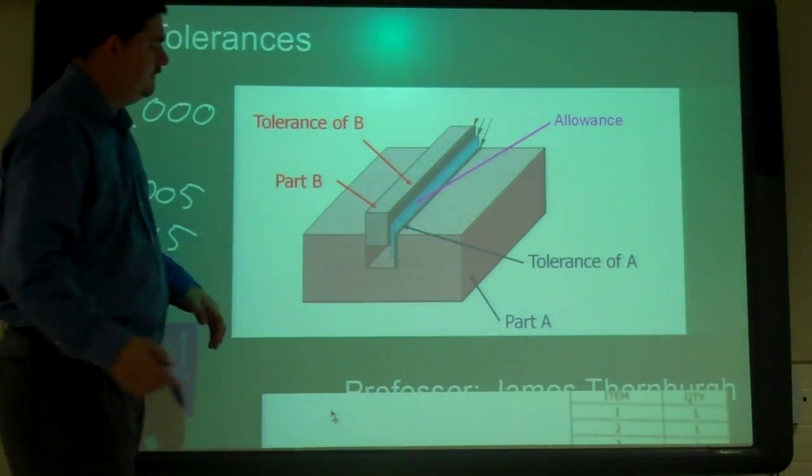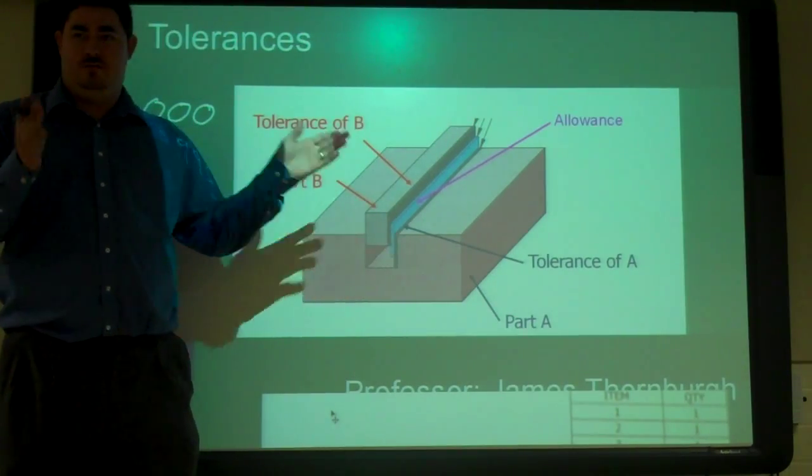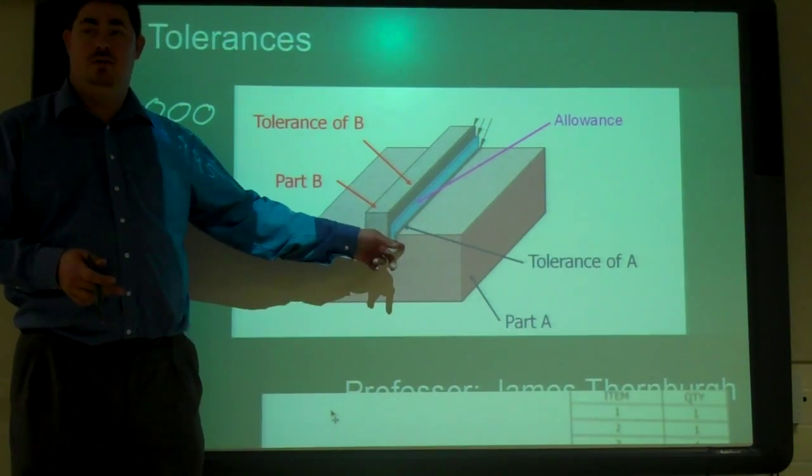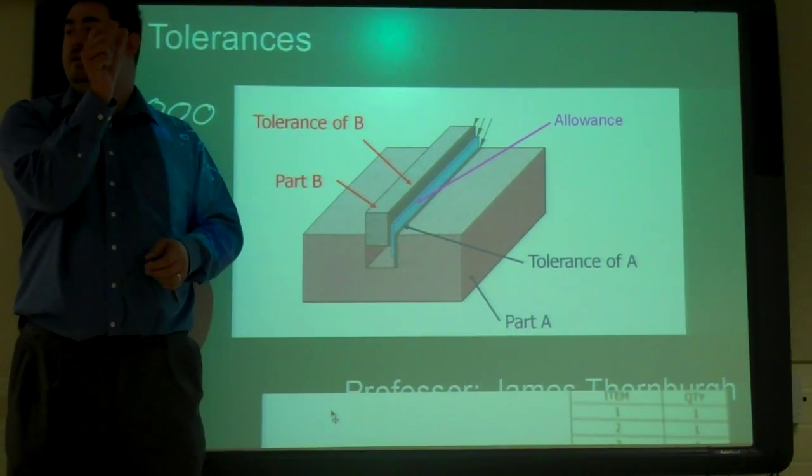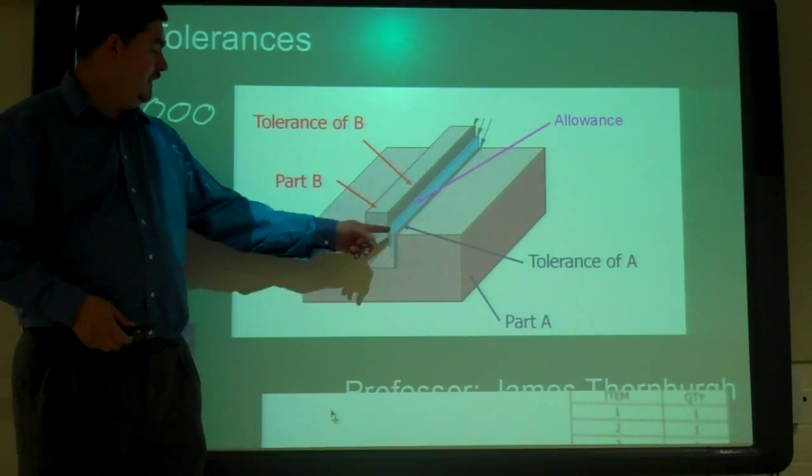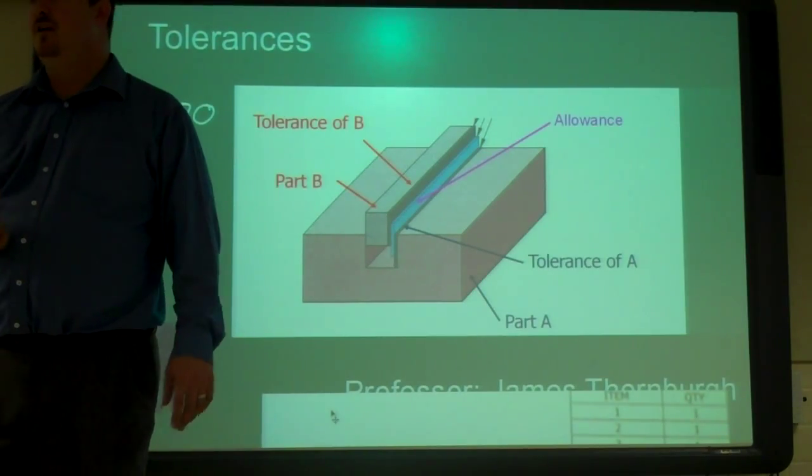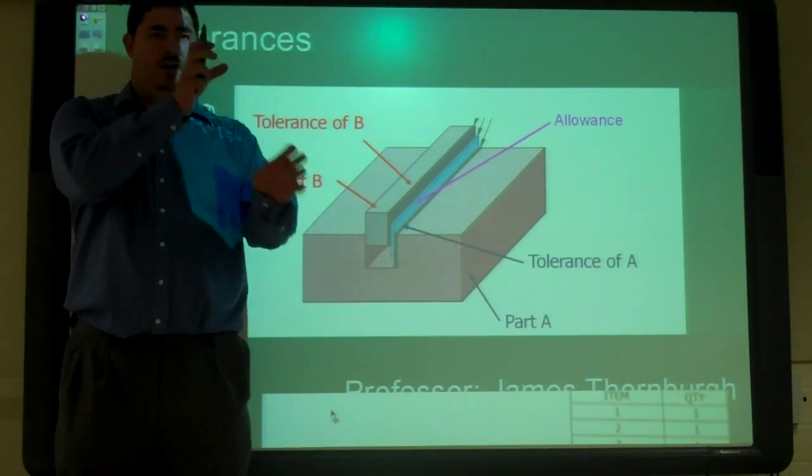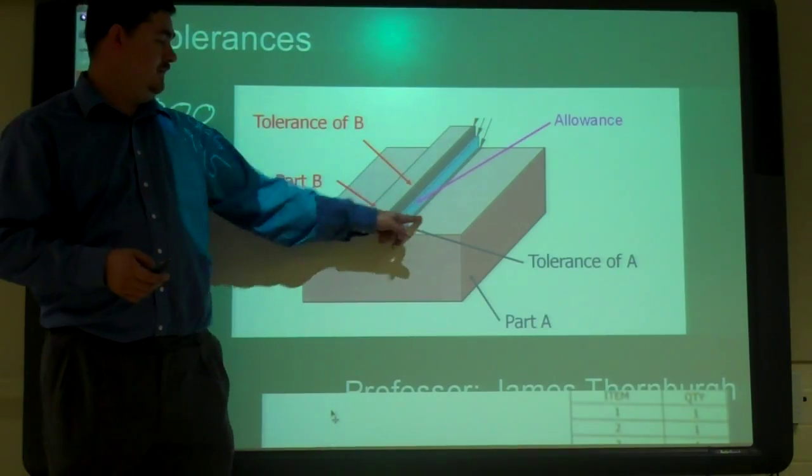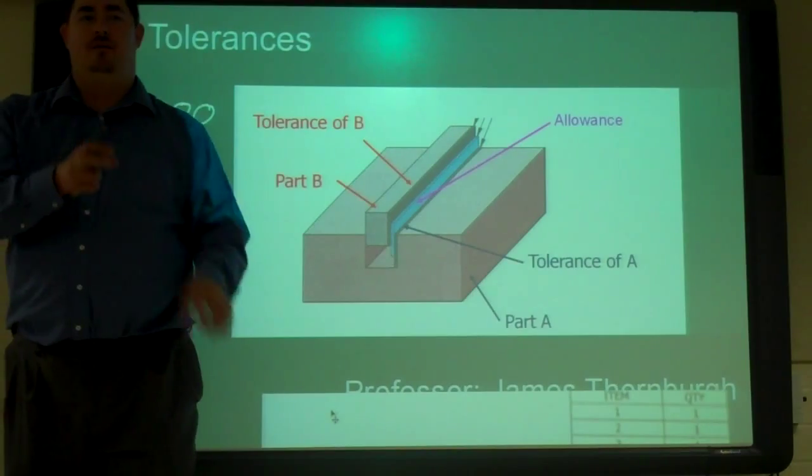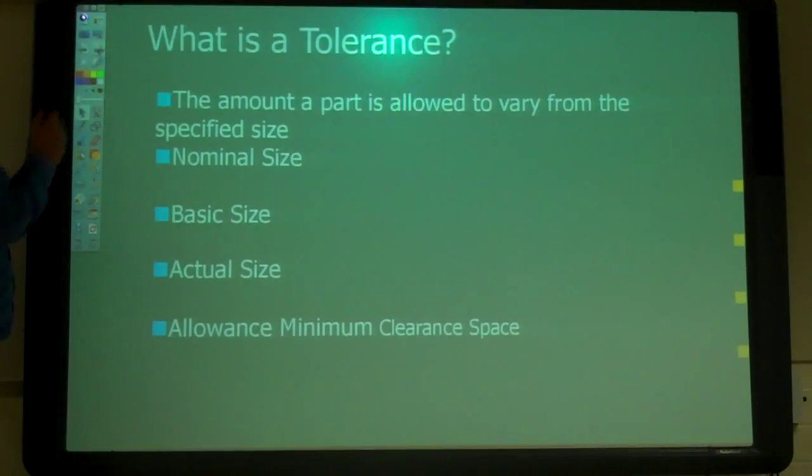And so with this, like here's two parts. And so right now they're shown at their smallest size. And then the gray is the tolerance. That's how much space they can vary in size. And usually there'll be some space in between called the allowance, or the minimum clearance. And so that'll make sure that they'll always fit together. Even when this part's its biggest and this hole's the smallest, they're still going to fit together.